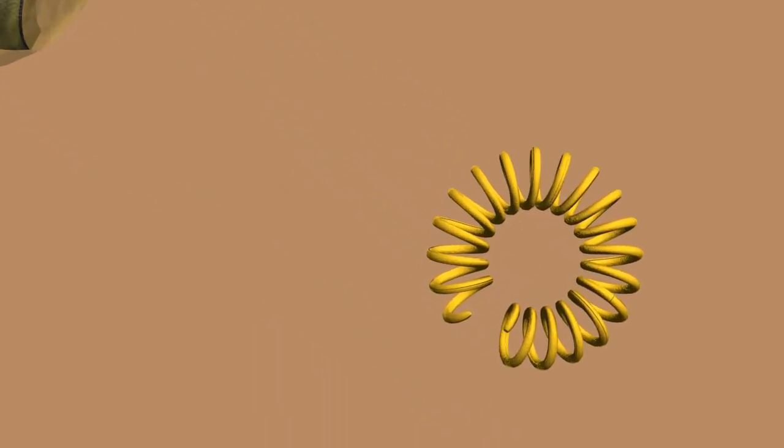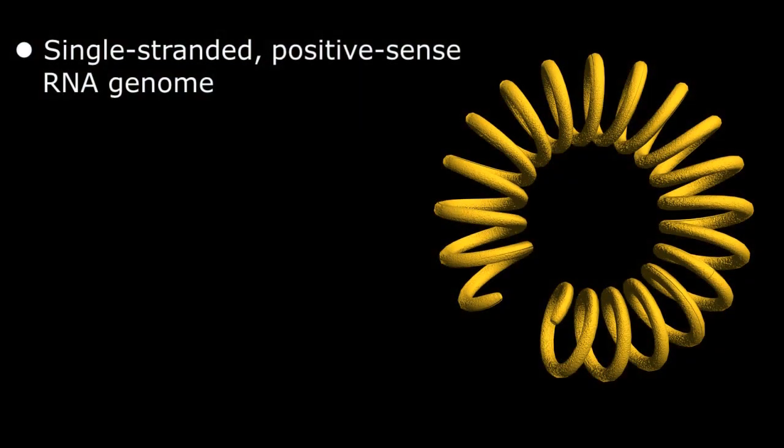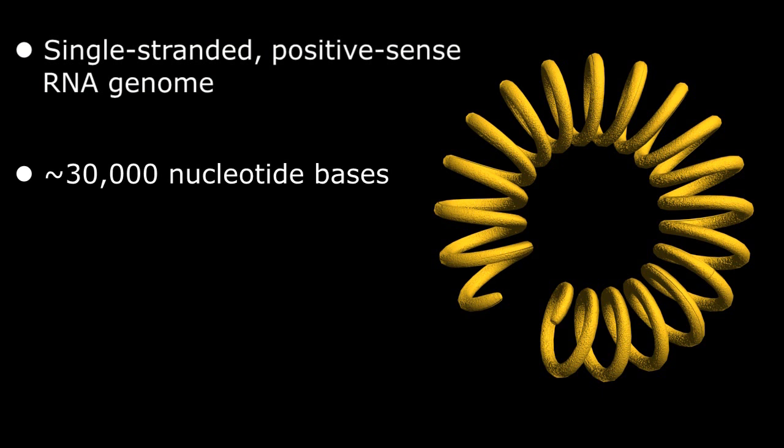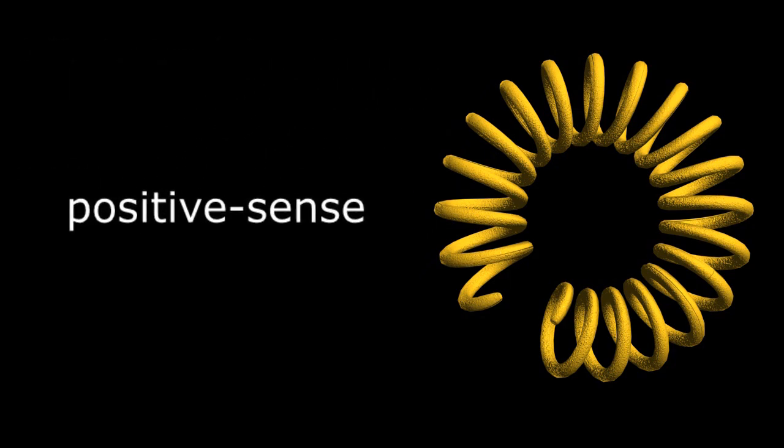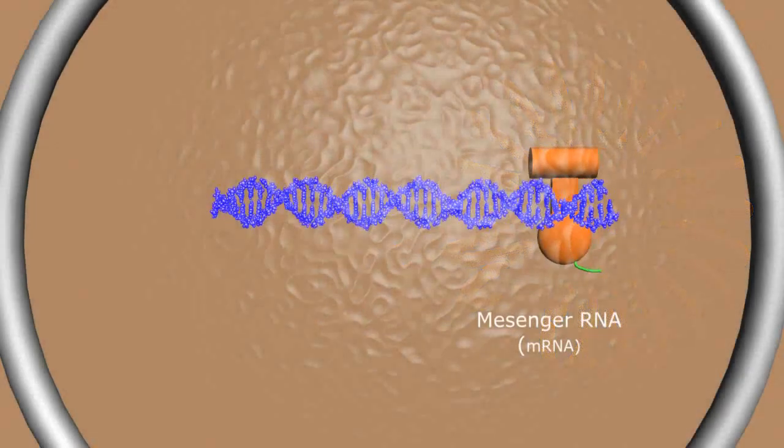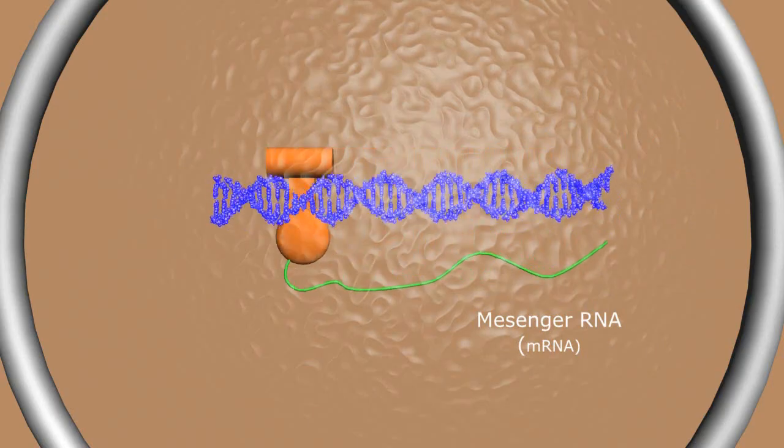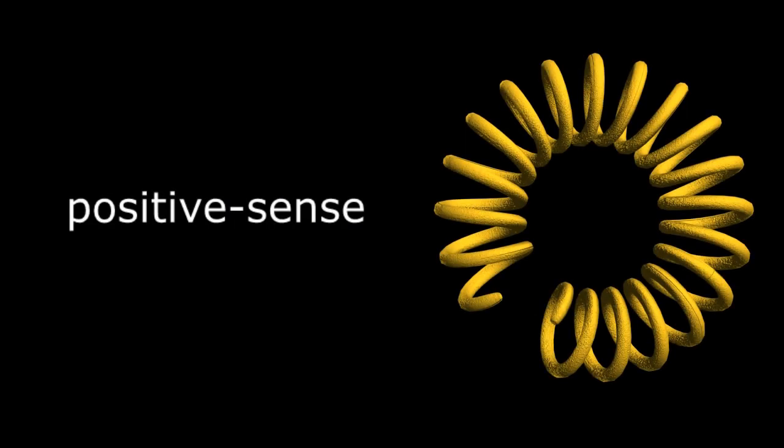Coronavirus genetic material is a positive sense RNA genome of about 30,000 bases, quite large considering some viruses contain a few dozen bases. Positive sense means that the viral RNA structurally resembles messenger RNA or mRNA of our host cells and therefore can be read and translated directly by the host ribosome.